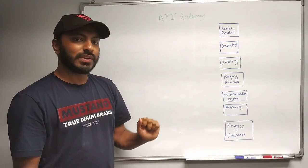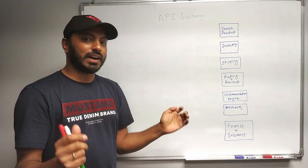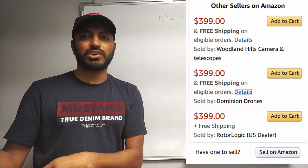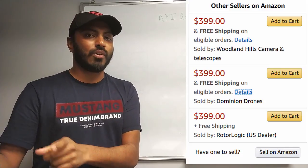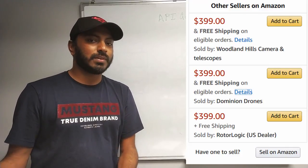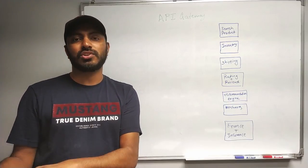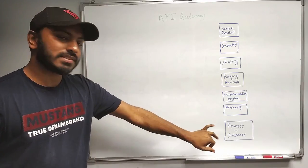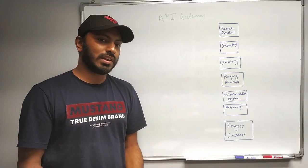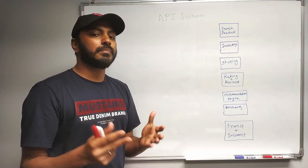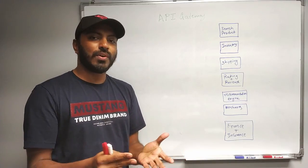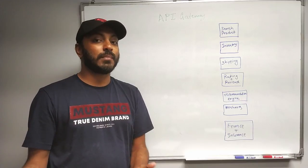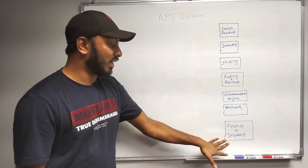We also need a merchants microservice because we need to show what other purchase options are available, which could be at a different price and with different shipping options. And finally, we need a finance plus insurance microservice as well, because we need to show extra warranty purchase options or EMI options.